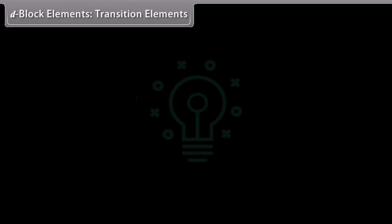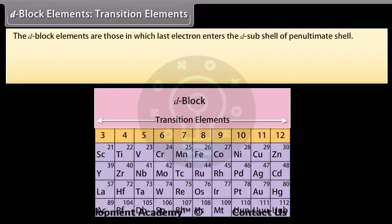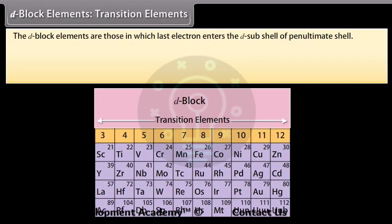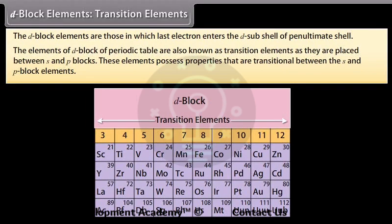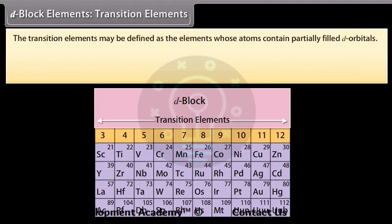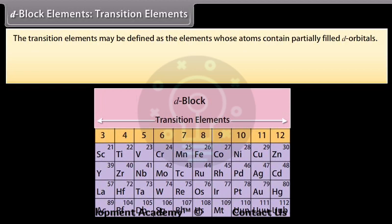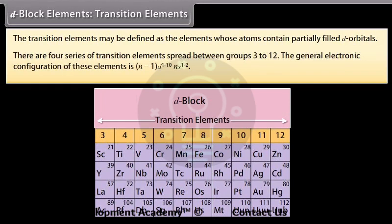The D-block elements are those in which the last electron enters the D-sub-shell of the penultimate shell. The elements of the D-block of the periodic table are also known as transition elements, as they are placed between S and P blocks and possess properties that are transitional between S and P block elements. The transition elements may be defined as elements whose atoms contain partially filled D-orbitals. There are four series of transition elements spread between groups 3 to 12. The general electronic configuration is (n-1)d¹⁻¹⁰ ns¹⁻².